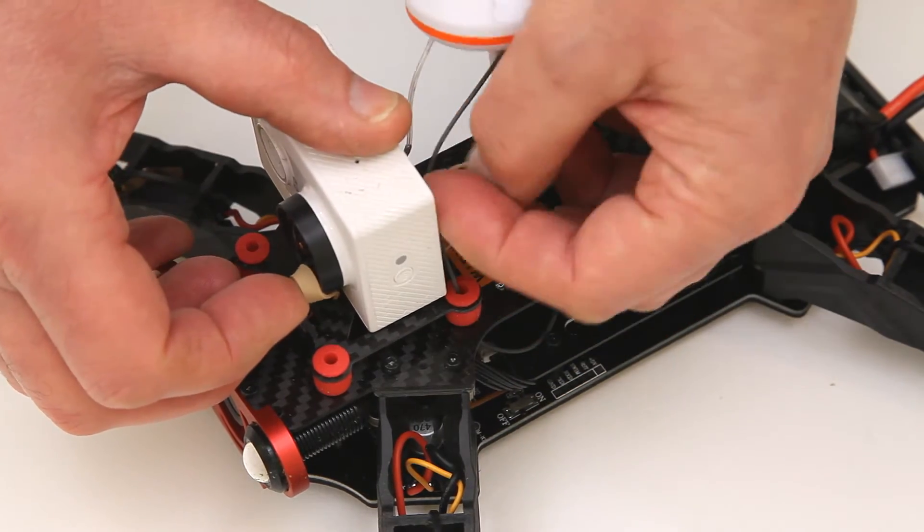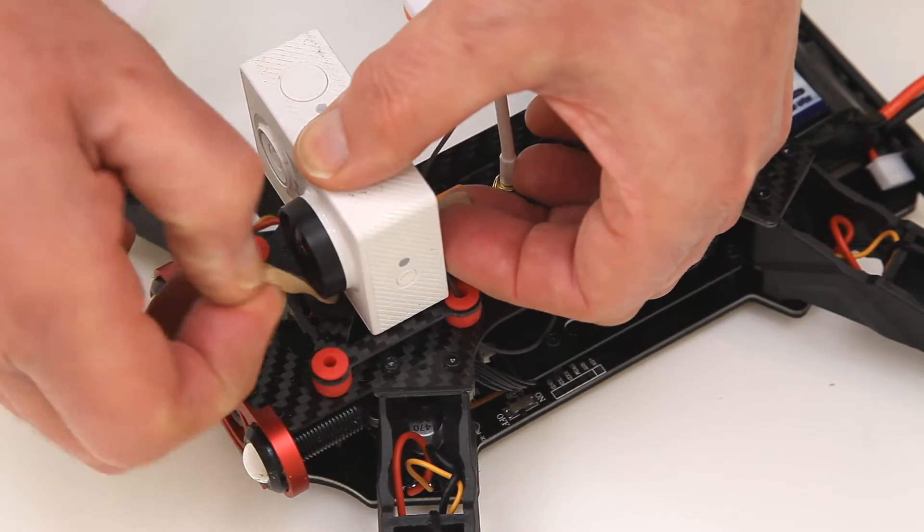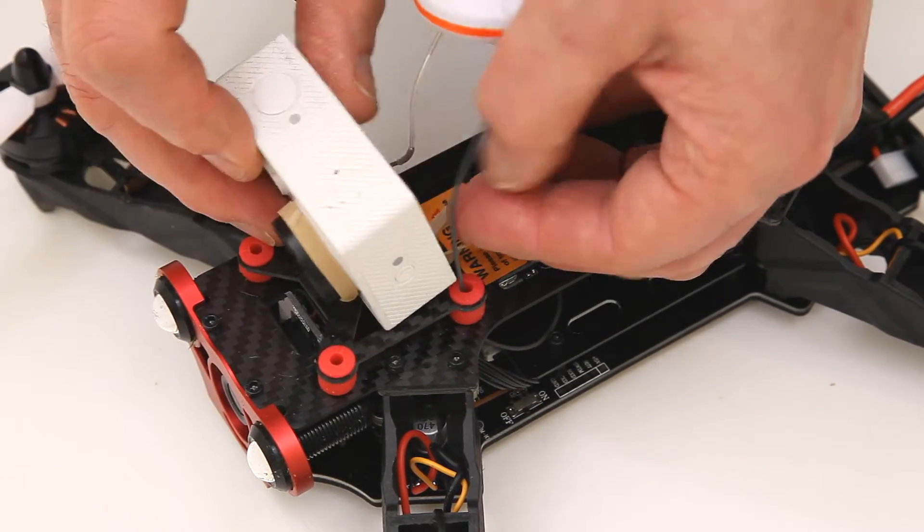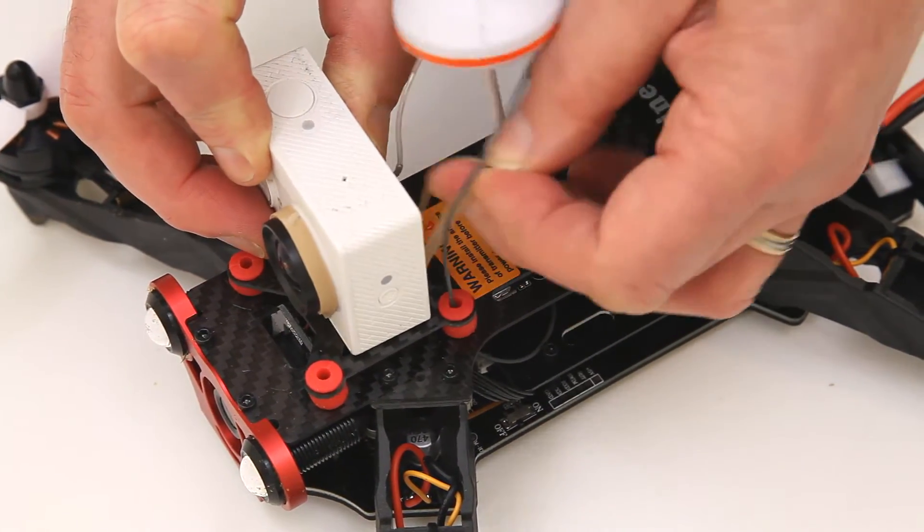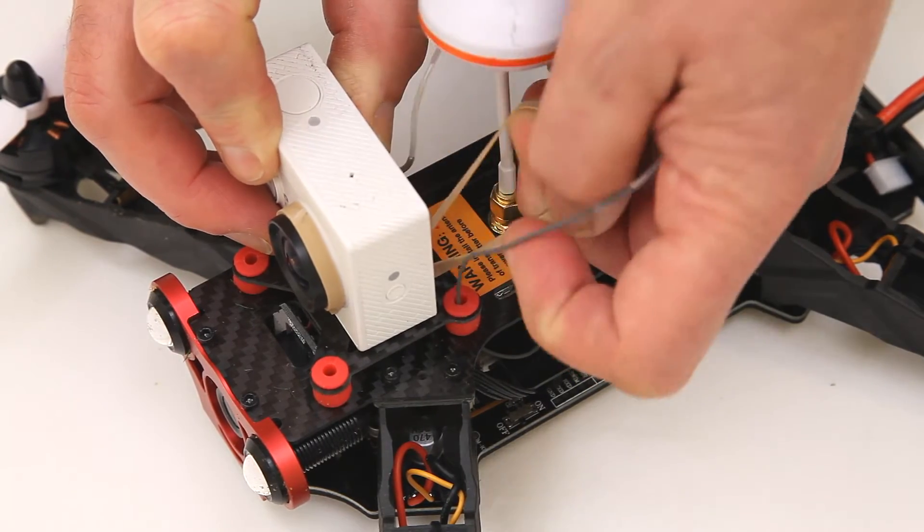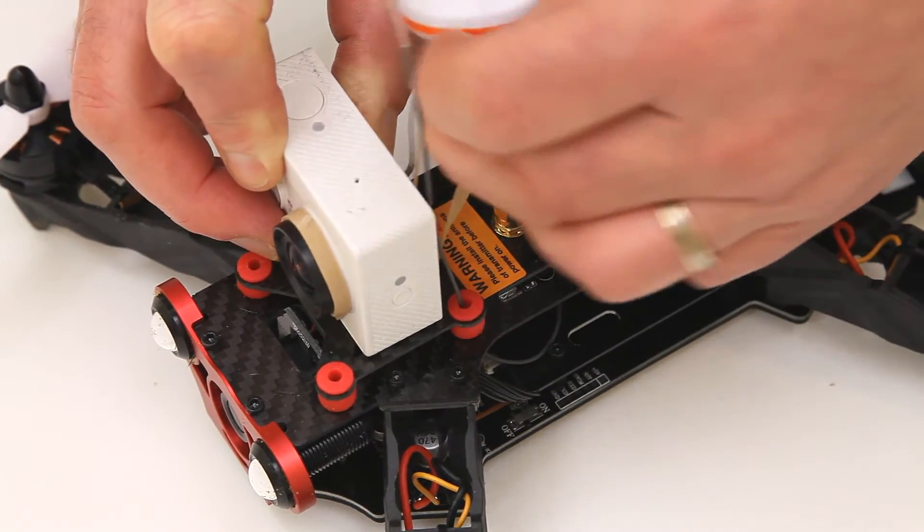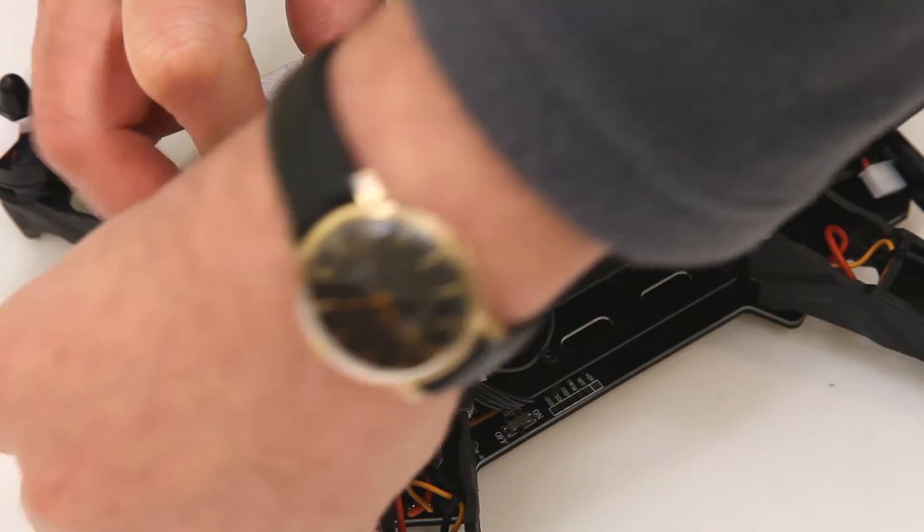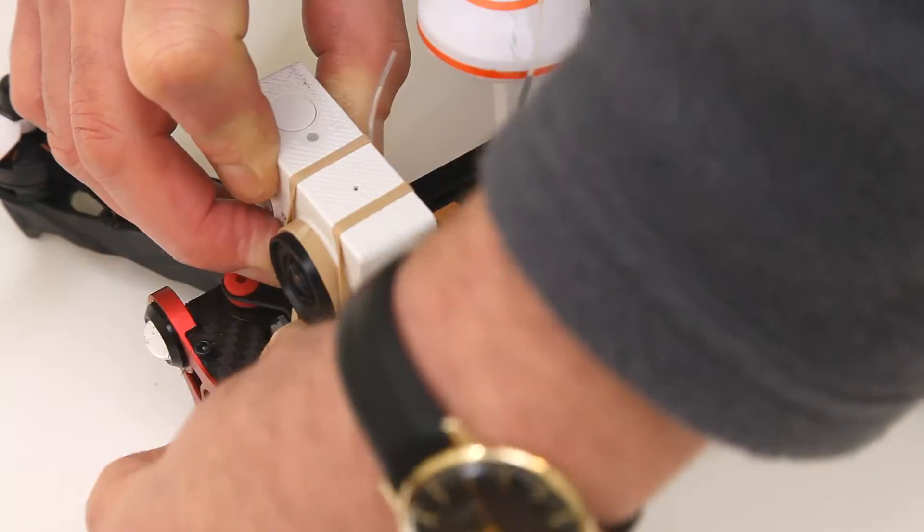Make sure you keep hold of the elastic band at the back, otherwise it will disappear under the camera. Just literally slip it round there, give it quite a tug on the back, give yourself a little bit of slack, and then round it over the top. That's it.